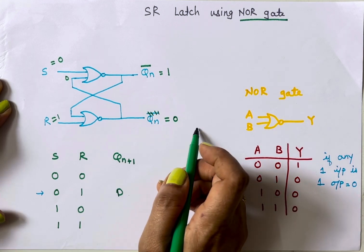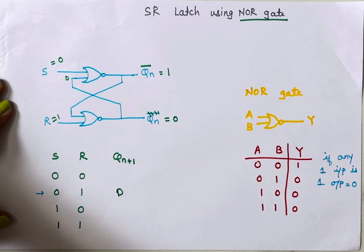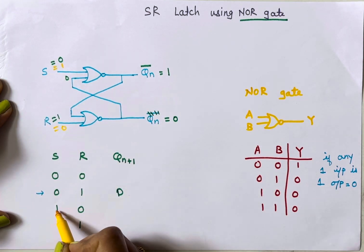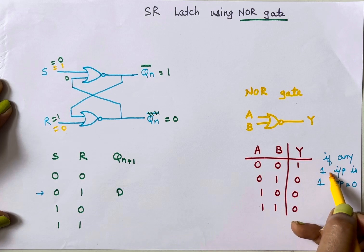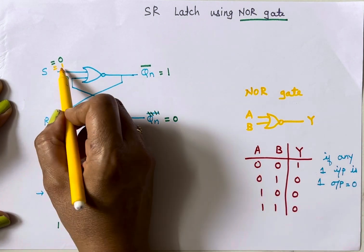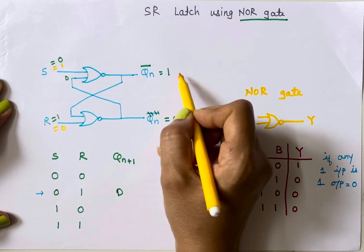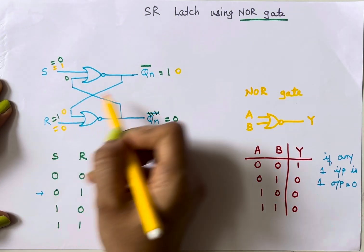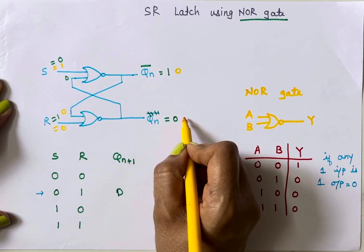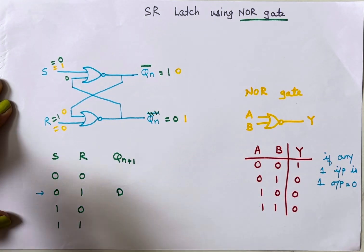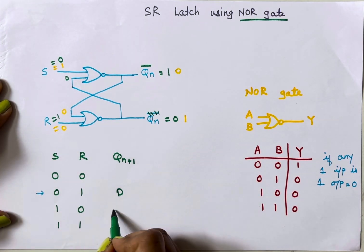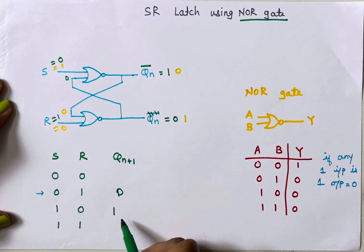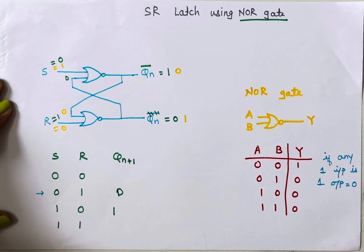For S=1, R=0: since S=1, any one input is one, so the output of the first gate is zero. This zero feeds into the second gate; with both inputs zero, that gate outputs one. So for S=1, R=0, Q(n+1) = 1. Summary so far for NOR: 0,1 → Q=0; 1,0 → Q=1.